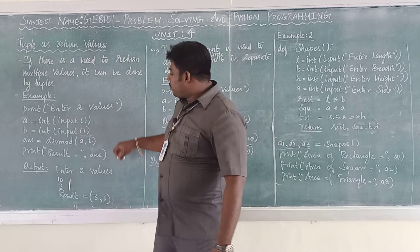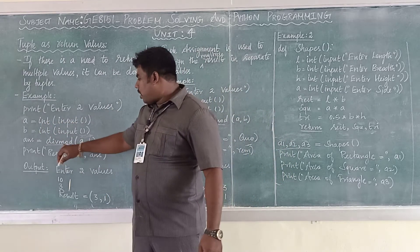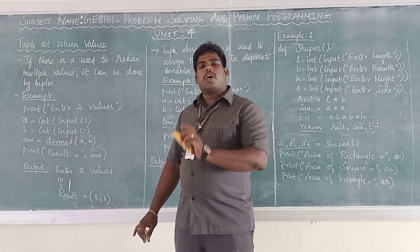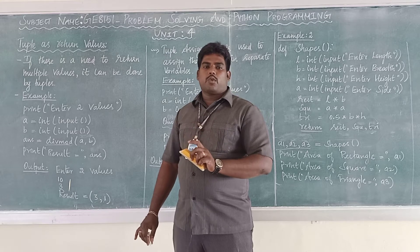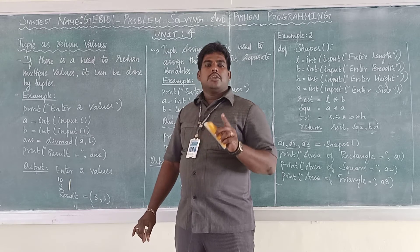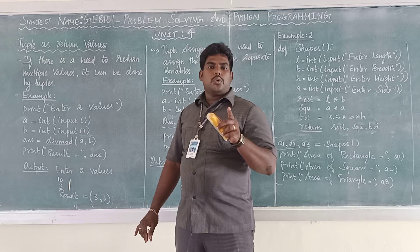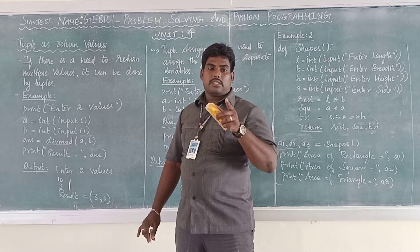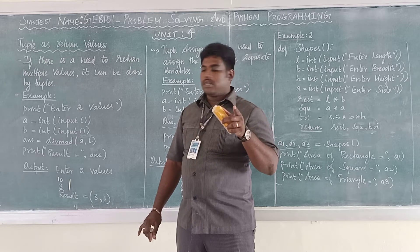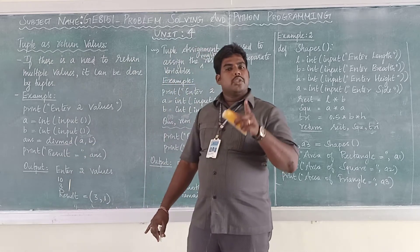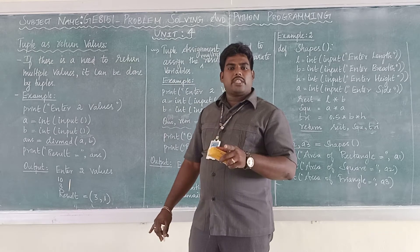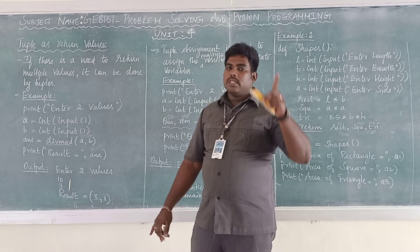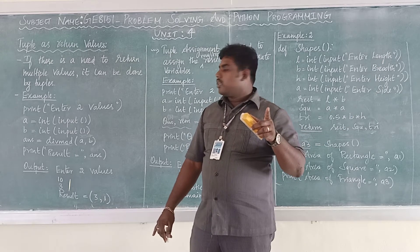Here, this divmod — D-I-V-M-O-D, division modulus — is a predefined function used to give two outputs: one is the quotient, that is the division quotient, and another one is the modulus, that is the remainder. So it is a predefined function used to return both the quotient value and the remainder value. This function returns two values.